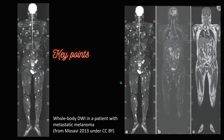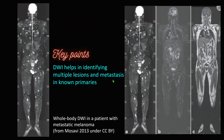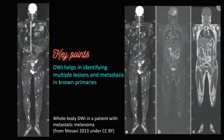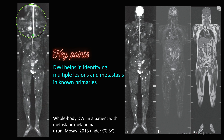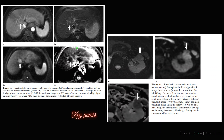DWI also helps in whole body MRI. When you perform whole body MRI, DWI helps in identifying multiple lesions and even metastasis in known cases of primaries. This was a case of metastatic melanoma — you can see there are multiple lesions scattered throughout the body on whole body MRI.